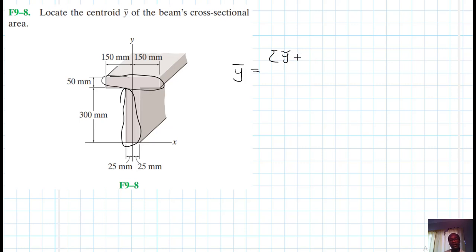So I'll sum them up, then times their areas, then divide it by the summation of areas. So this is basically the formula that we're going to use.